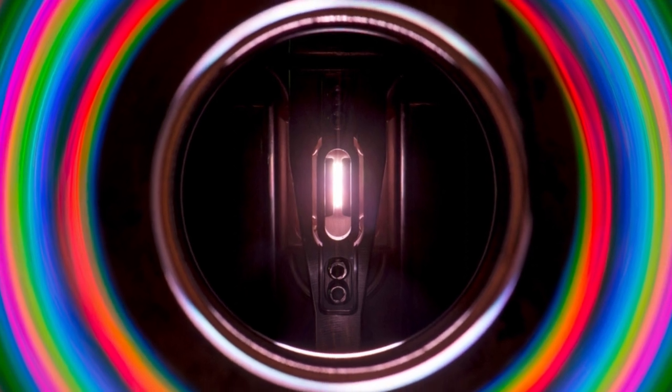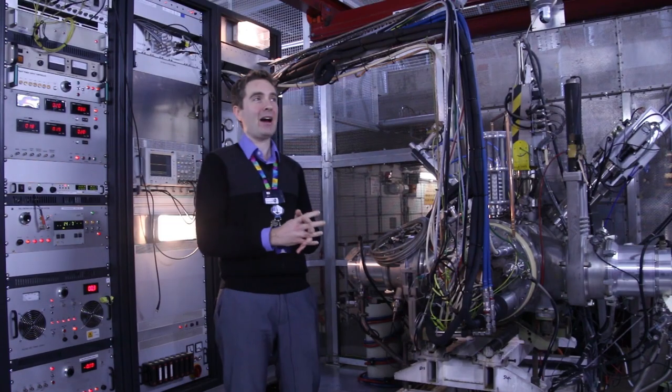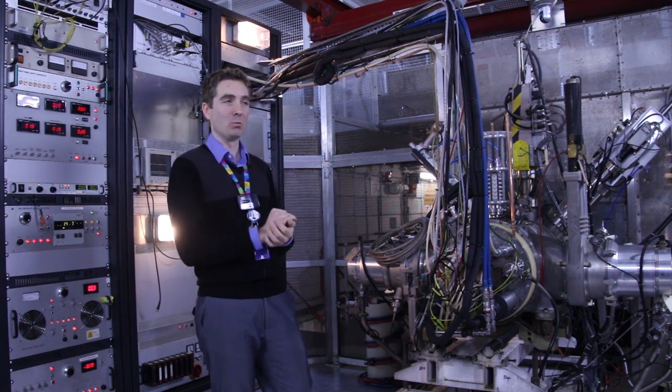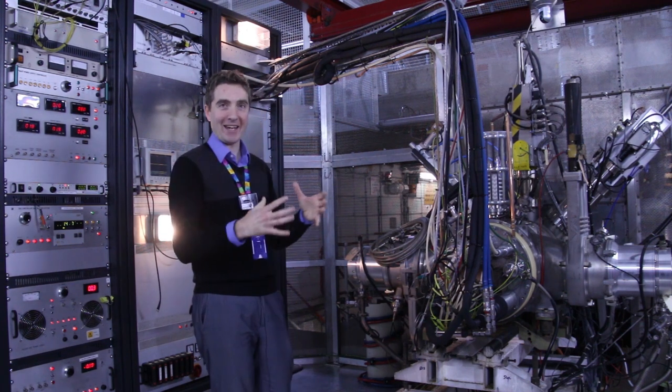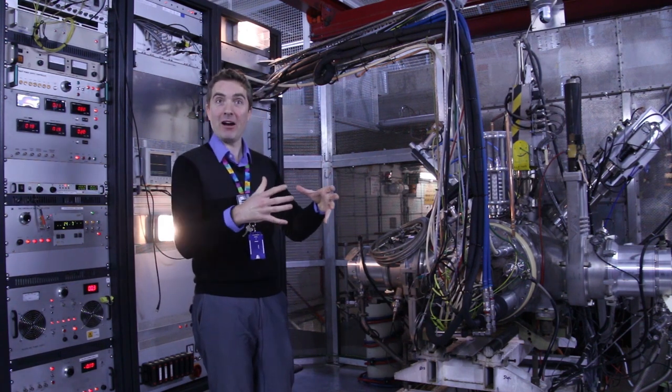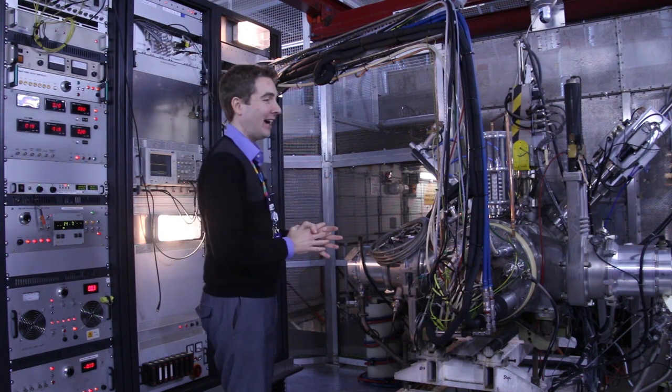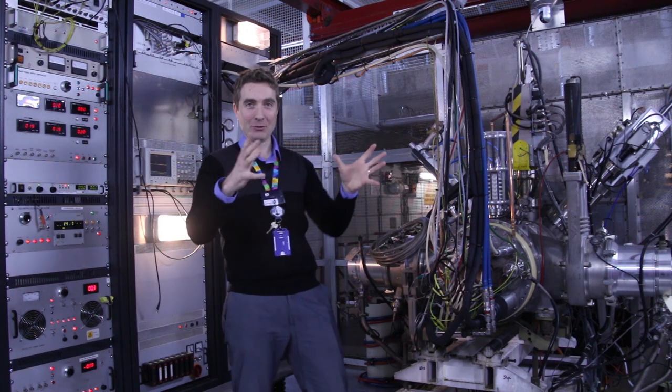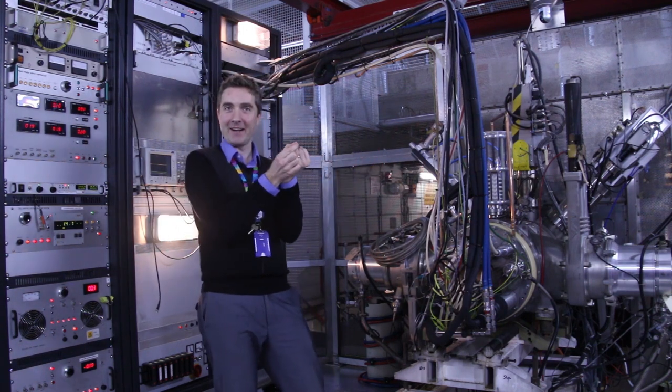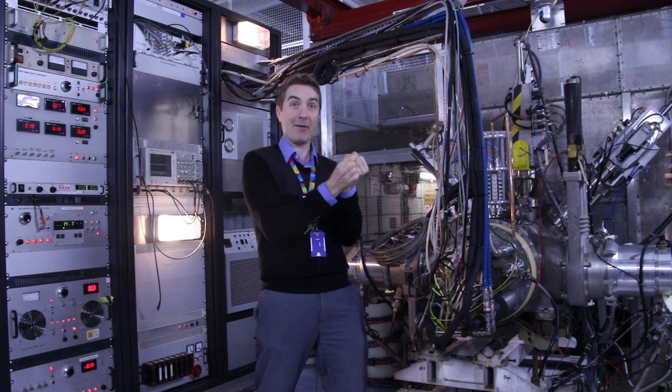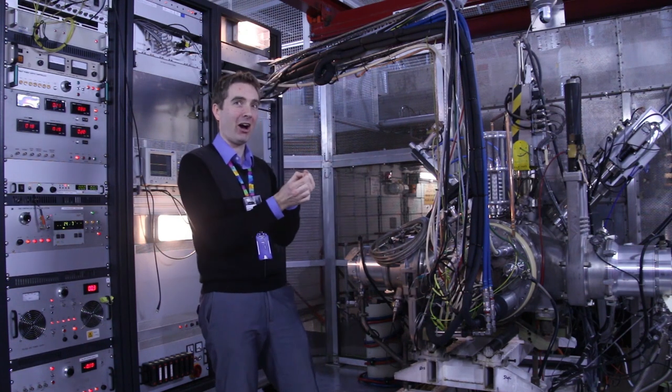The amount of power that we're putting into this cathode to generate the plasma is about three kilowatts, three thousand watts. If you imagine your kettle is a kilowatt, the amount of power you need to heat up your cup of tea in a kettle is a kilowatt. If you have three kettles and you squash them down to something the size of your fingertip, that's giving you an idea of how much power there is in this thing. It's very high power.